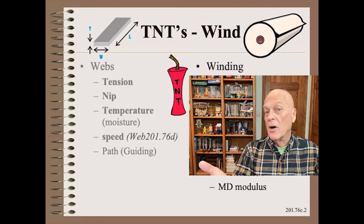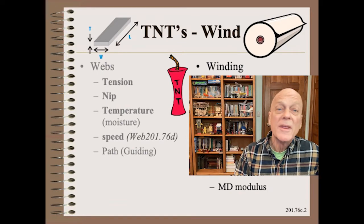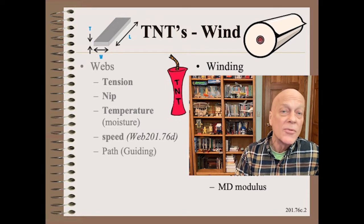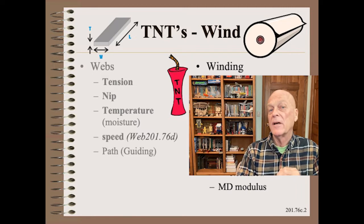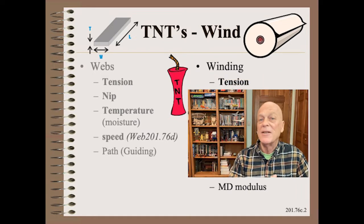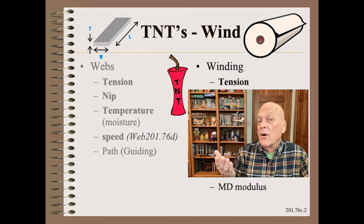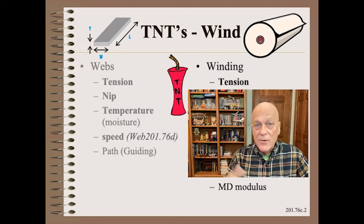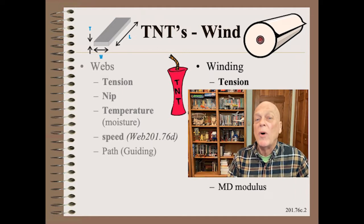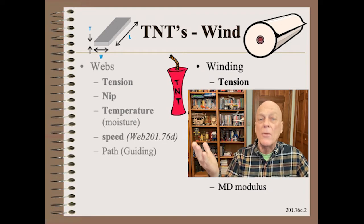Everyone in my audience should already be familiar with the TNTs of winding, as taught by my award-winning and trademarked Web 101 class that has been taken by 5,000 people. The T stands for ordinary web tension, such as entering the wind-up station. This wound roll tightness knob is available on all winders.